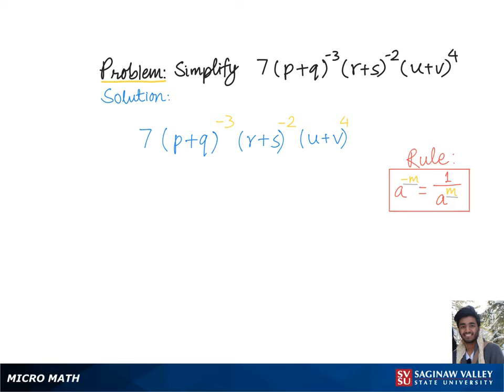Here in our problem we have p plus q to the negative 3 and r plus s to the negative 2 as negative exponents in the numerator. So to simplify our problem we'll just move them to denominator which gives